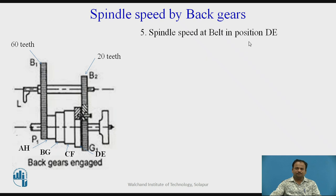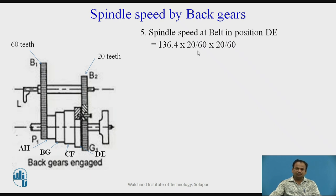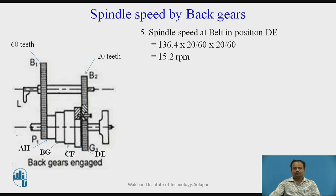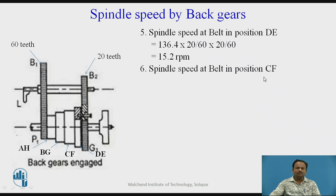Spindle speed at belt position D with back gear: the first cone pulley speed was 136.4 rpm. Multiplied by the reduction factor 20/60 × 20/60, we get 15.2 rpm. This is the minimum speed of the lathe machine, used for removal of harder material. Spindle speed at belt position CF with back gear: 233.3 × 20/60 × 20/60 gives us 25.9 rpm.